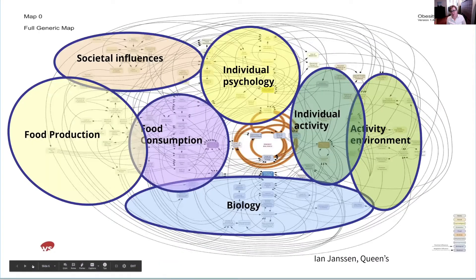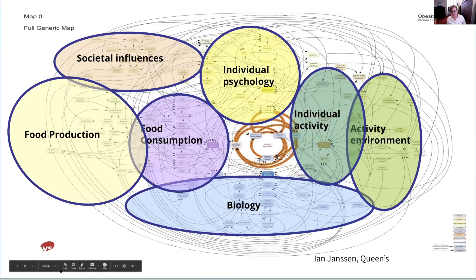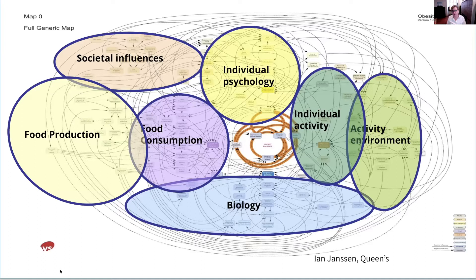This is the actual map of obesity — I love this one from Ian Jansen at Queens. It just shows that there are elements here which are under an individual's control, where some behavioral modification could have some influence, especially in the lens of primary care around prevention. But there are things that are in people's personal circumstances that are not modifiable. We just need to recognize that this is such a complex condition.